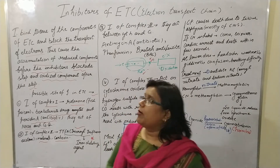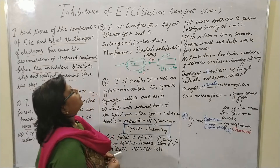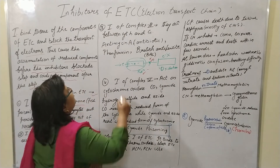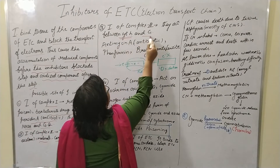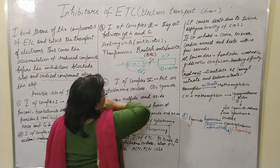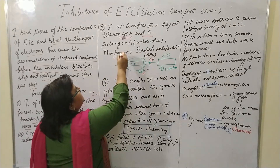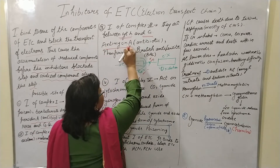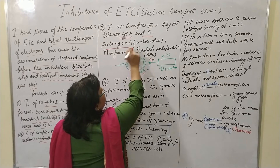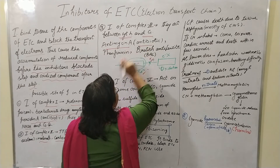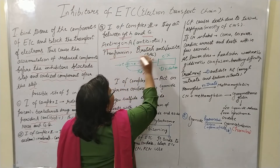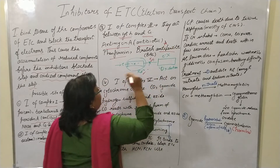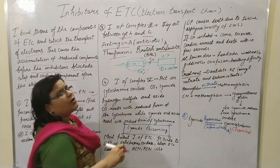The inhibitors of complex 3 act on cytochrome b and cytochrome c1. The examples are antimycin A, which is an antibiotic; phenformin; and BAL, which stands for British Anti-Lewisite.